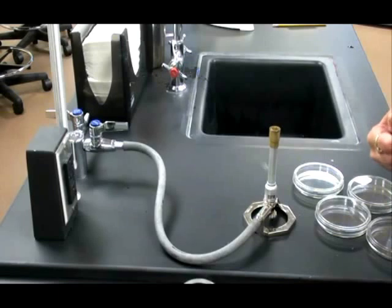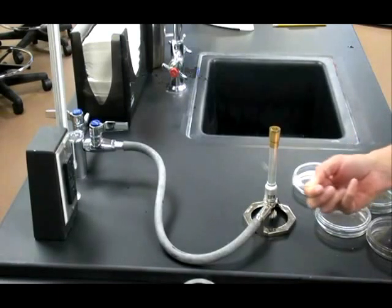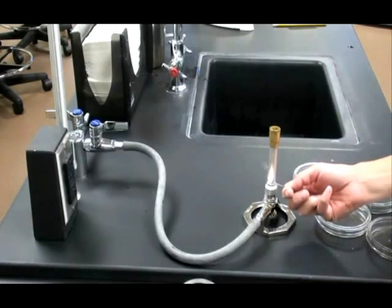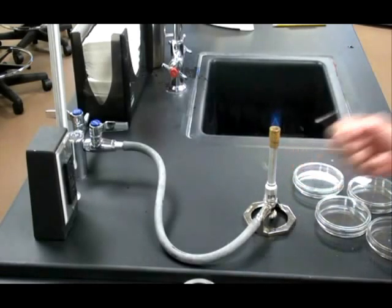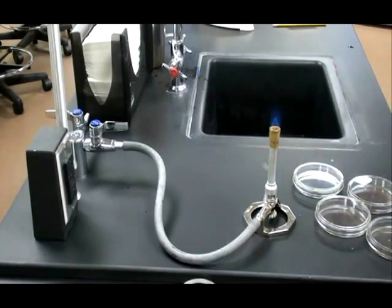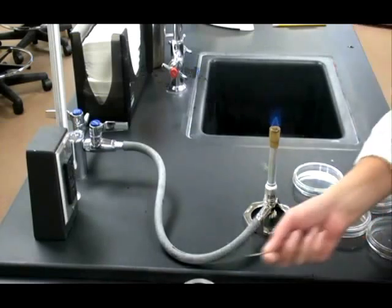Now I'm going to light my Bunsen burner with a match. I take that lit match and run it up the side of the barrel of the Bunsen burner until it comes in contact with the gas and ignites the flame. I then extinguish the match and put it somewhere safe to cool down.